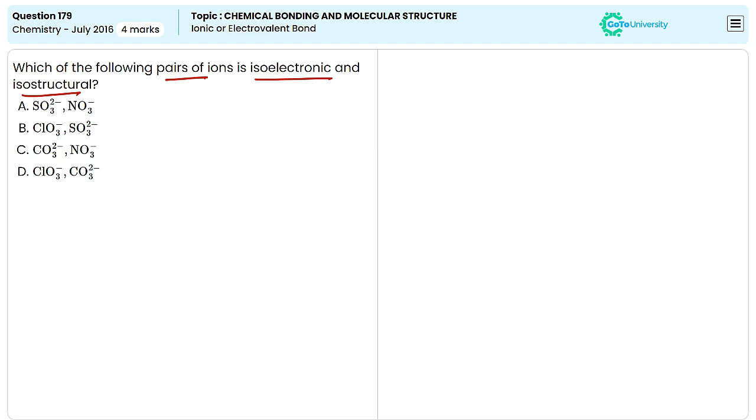Let's come to the options given here. The first one is SO32-. SO32- has the given pyramidal geometry and we can see the number of electrons will be 42. And the second one is NO3- with the given structure.